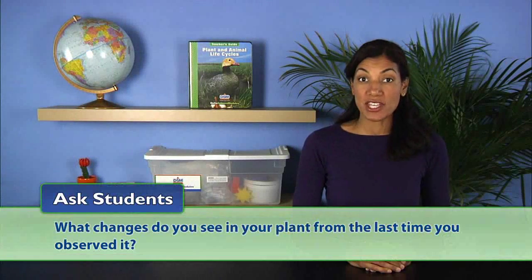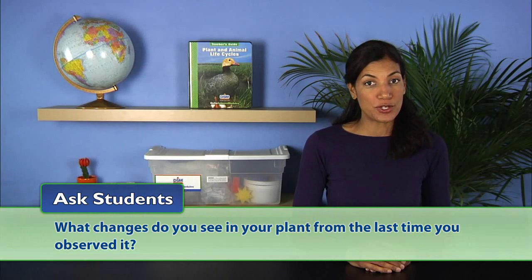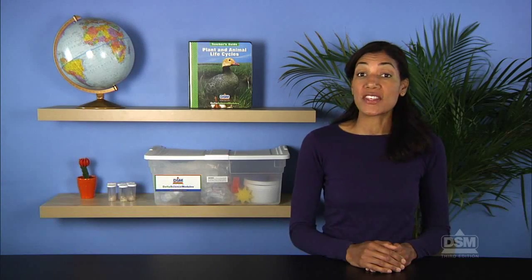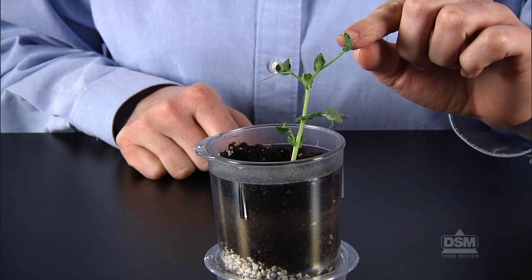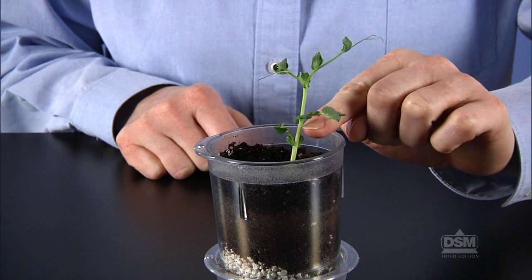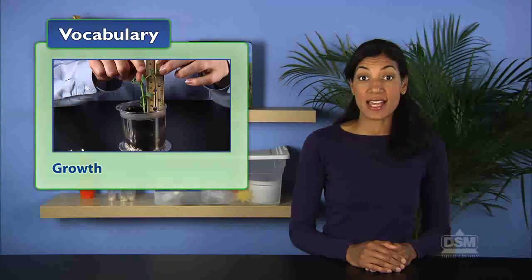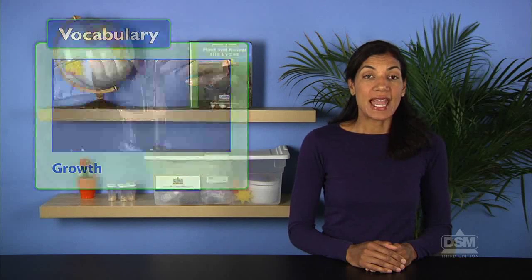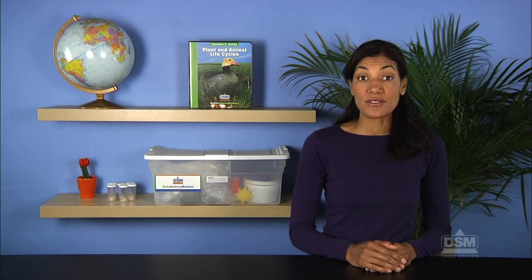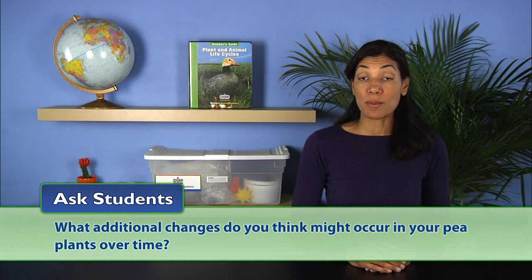Ask students what changes they see in their plant from the last time they observed it. The students should notice that the stems are longer and have developed branches and delicate tendrils, and the leaves are larger and more numerous. Inform the class that growth is an increase in size or development of a living thing, and that these plants have grown and developed leaves, roots, and stems. Ask students what additional changes they think might occur in their pea plants over time. Accept all reasonable guesses, such as the growth of stems and branches will continue, more leaves will grow, or flowers will appear.